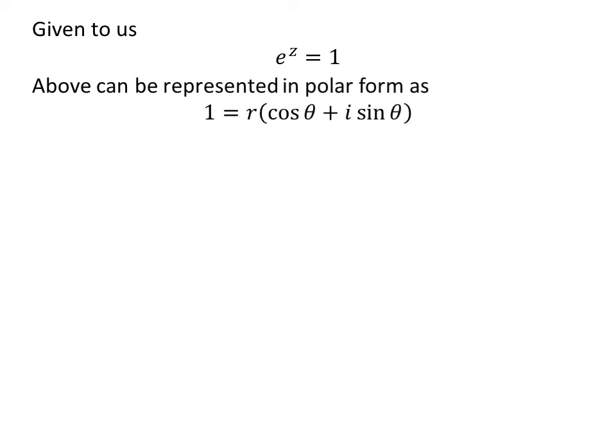The complex number 1 can be represented in polar form as r times cosine of theta plus i times sine of theta, where i is the imaginary unit. Here, r is equal to the modulus of 1, and r times cosine of theta is equal to 1, and r times sine of theta is equal to 0.